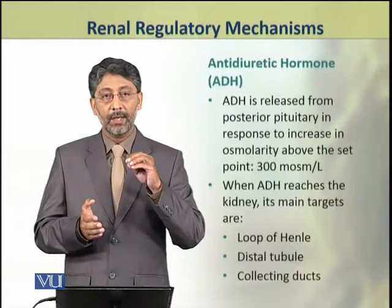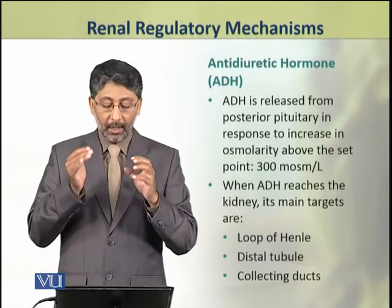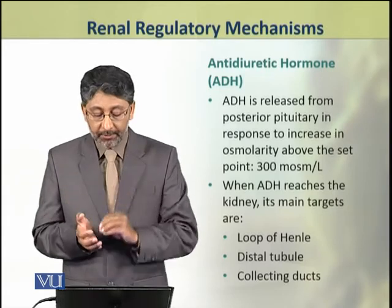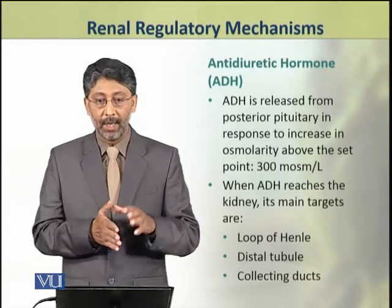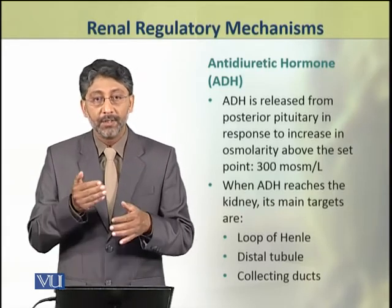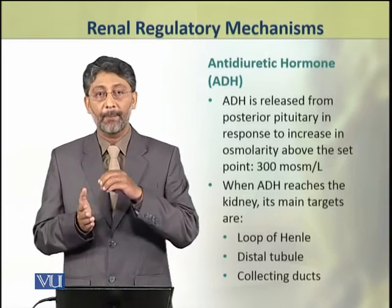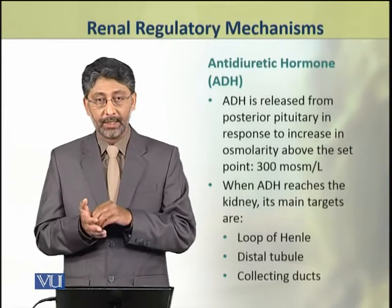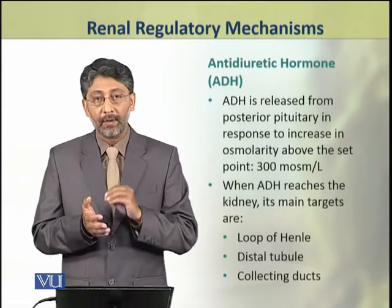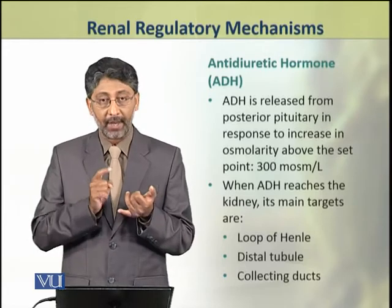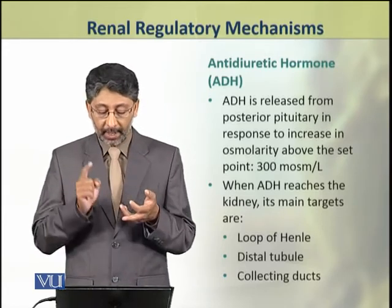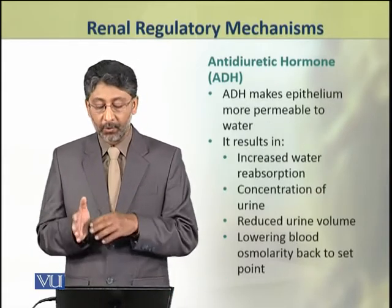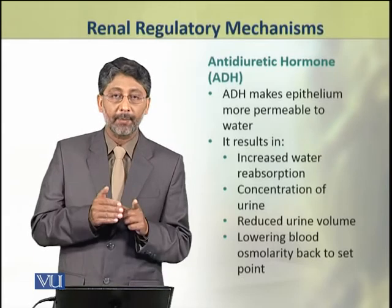The anti-diuretic hormone is released from the posterior pituitary in response to an increase in osmolarity above the set point, which is about 300 milliosmol per litre. When anti-diuretic hormone reaches the kidney, its main targets are the loop of Henle, distal tubule, and collecting ducts. Anti-diuretic hormone makes the epithelium more permeable to water.